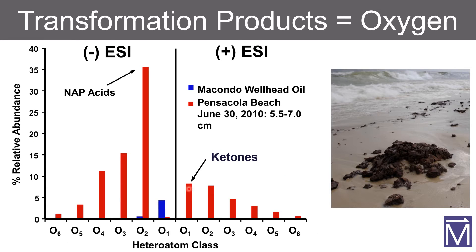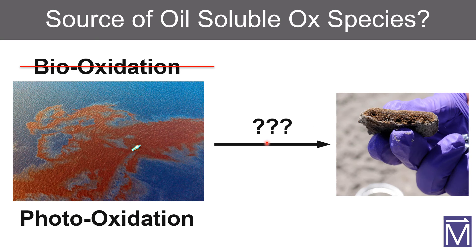This is readily apparent in the class graph, where we combine all species in classes O1, O2, and O3 all the way up to O6. In positive electrospray we characterize ketones, and you can see a distribution all the way up to six oxygens per molecule. We see a similar distribution, albeit slightly different starting at O2, when looking at acidic species — most notably carboxylic acids, which contain two oxygens but also go out to six. Clearly, in field samples, oxidative processes have occurred. It is photo-oxidation — not bio-oxidation — that is the dominant process forming these oxidized species detected in field samples.